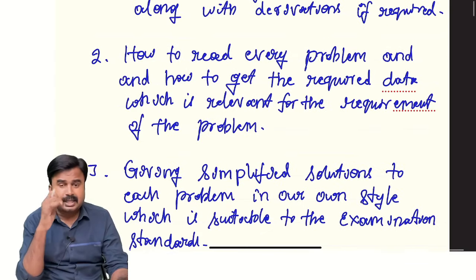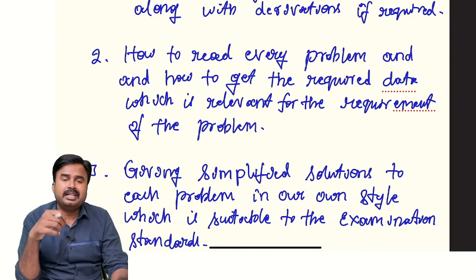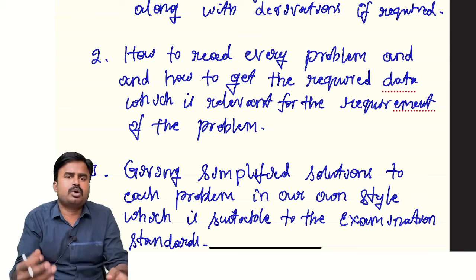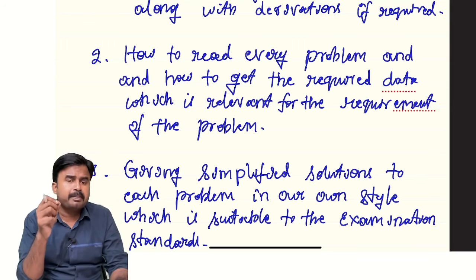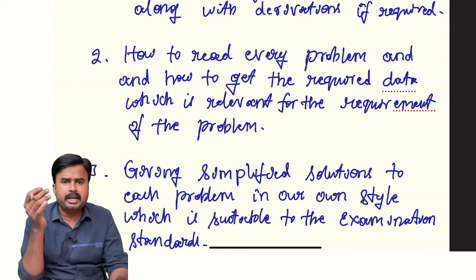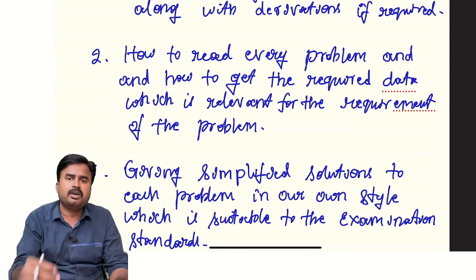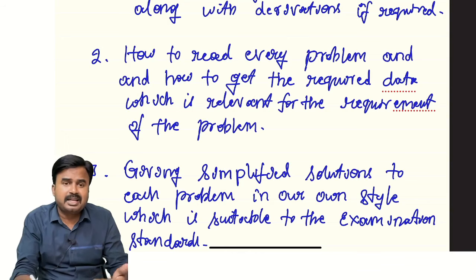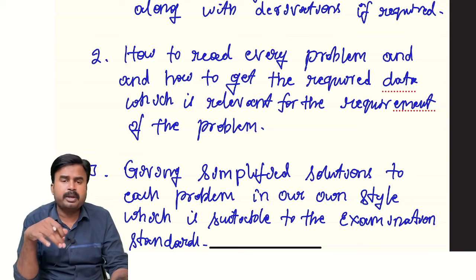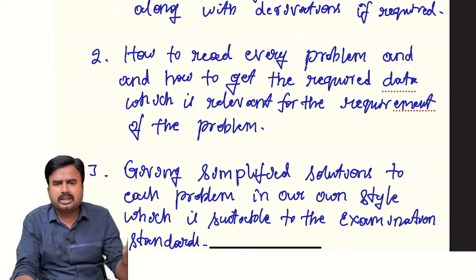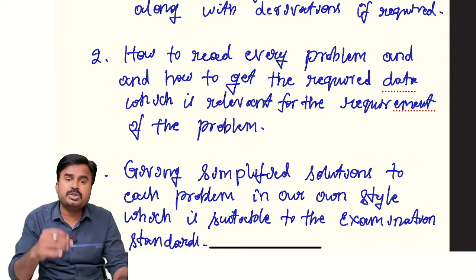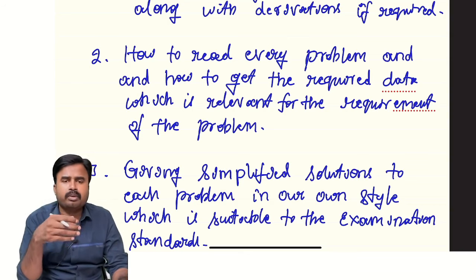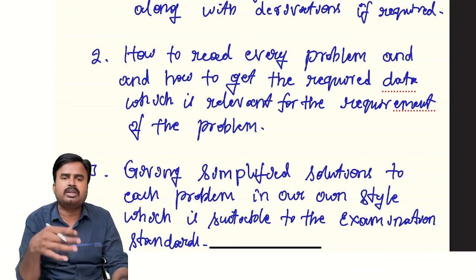This is also a problematic paper — you need to handle lengthy problems. You have to understand the problem merely by reading; you cannot simply solve problems by formula alone. The approach to the problem is very important. If you cannot approach the problem properly, you cannot handle it. So if you want to solve the problems, first of all you should be able to read the question properly, get the data, and understand the requirement. They may give you 10 data points but you just need six — the other four may be irrelevant and not required for your solution. Based on the requirement, we should get the data and solve the problems.